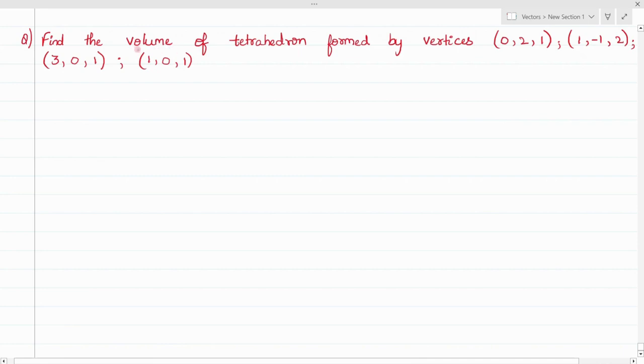In this question we need to find the volume of tetrahedron formed by vertices A, B, C, and D. We have seen the major condition to find the volume of tetrahedral or parallelepiped: first we want all three vectors to be co-initial vectors. So let's make them co-initial.